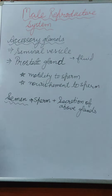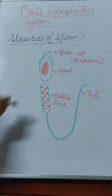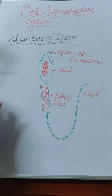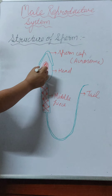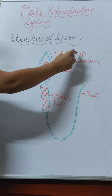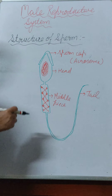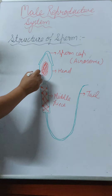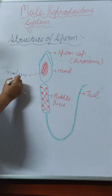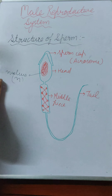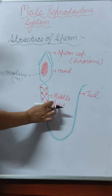Now let us learn the structure of the male gamete in humans — the sperm. The sperm is divided into three main parts: head, middle piece, and tail. The head of the sperm is covered by a cap-like structure known as the sperm cap, also called the acrosome. The acrosome has a special role when fertilization occurs. The head consists of the nucleus, and since it is a gamete, the number of chromosomes is haploid (n).